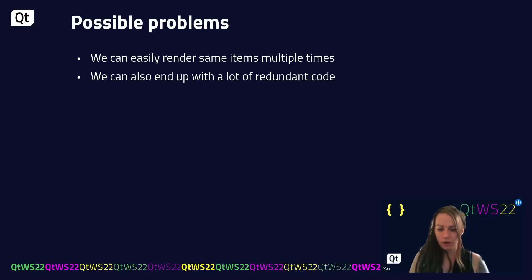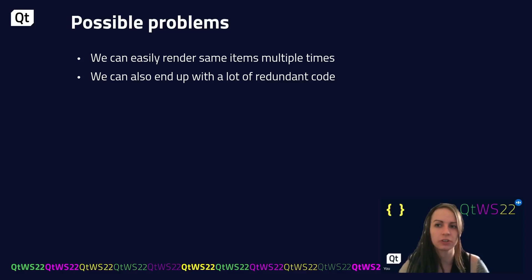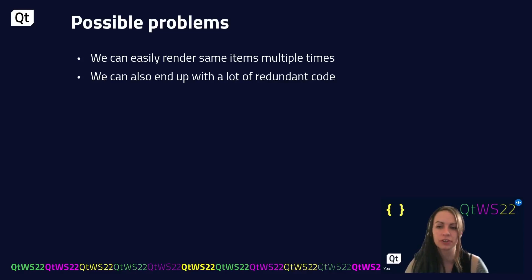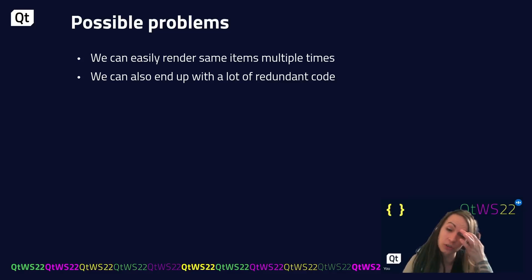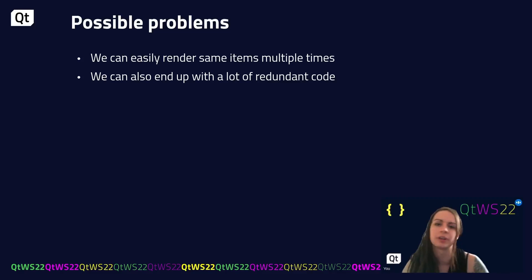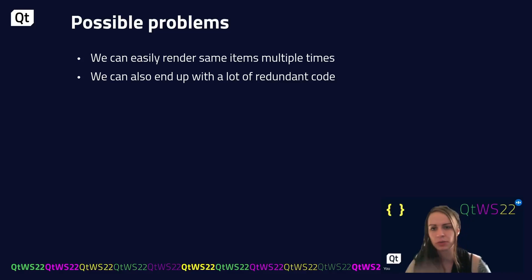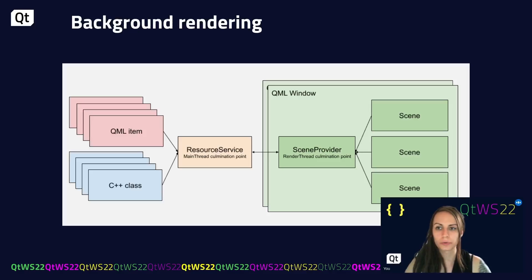This approach of using custom OpenGL rendering in Qt can sometimes cause problems, especially in terms of redundancy — both of code and of work. If you have multiple QML components rendering your own code, you are in most cases rendering the same scene over and over again multiple times in the same render path. So how do we actually solve that?